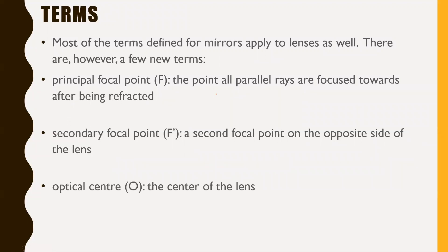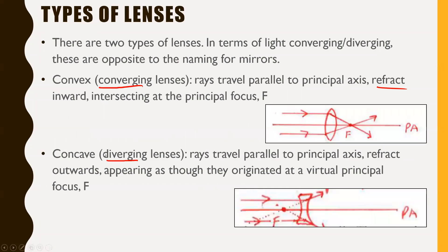The secondary focal point, F with a little apostrophe after it, is the second focal point on the opposite side of the lens to the principal focal point. On a convex lens, your secondary focal point F′ will be on the opposite side, but on a concave lens it'll be on the same side as the incoming light.